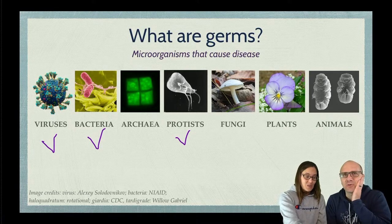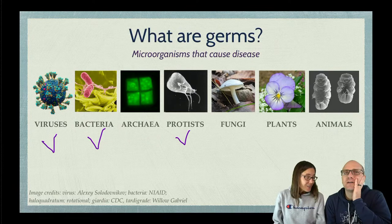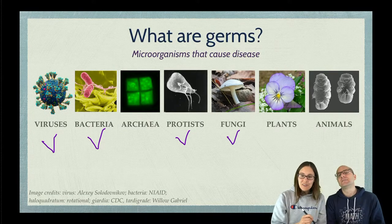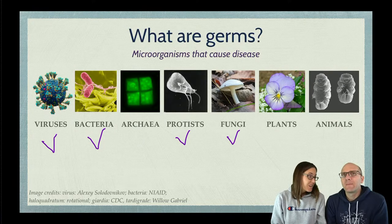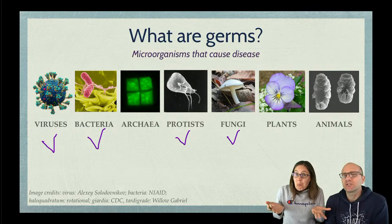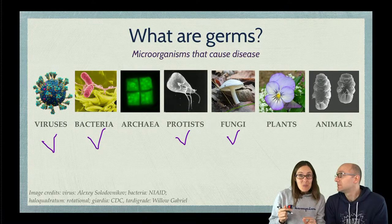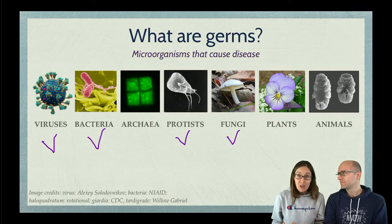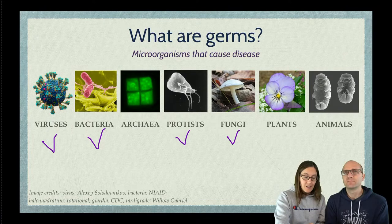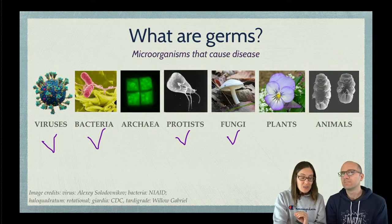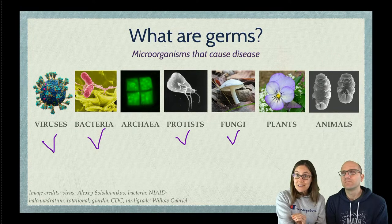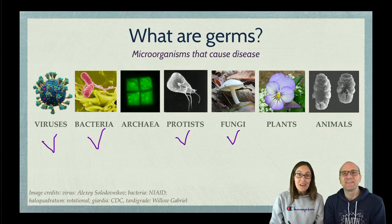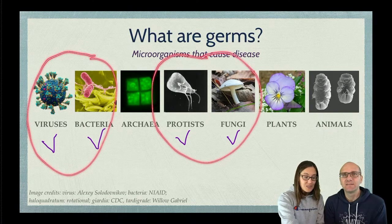Can fungi cause diseases? Oh yeah, you could totally get something fungal. What about plants and animals? They're not going to be germs. There are certainly poisonous plants, and there are animals that are parasites — things like tapeworms. But usually we call these parasites, and if it's a plant we call it poisonous. So plants, animals, and archaea aren't germs. But viruses, bacteria, protists, and fungi are, and we're going to go through examples of each of these four.